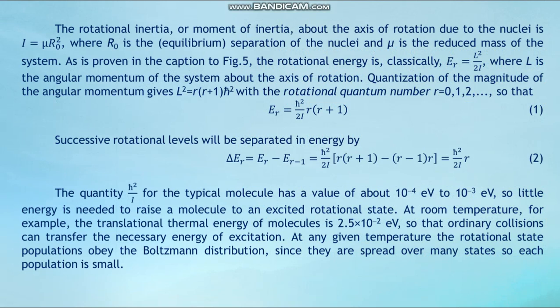The quantity ℏ²/I for a typical molecule has a value of about 10⁻⁴ to 10⁻³ electron volts. So little energy is needed to raise a molecule to an excited rotational state. At room temperature, for example, the translational thermal energy of the molecule is 2.3 × 10⁻² electron volts, so that ordinary collisions can transfer the necessary energy for excitations.